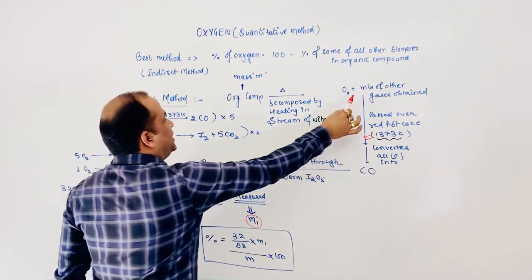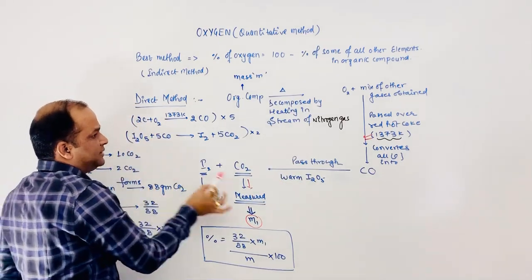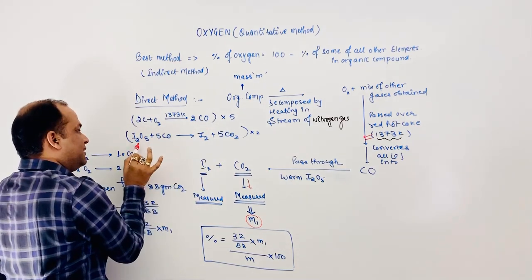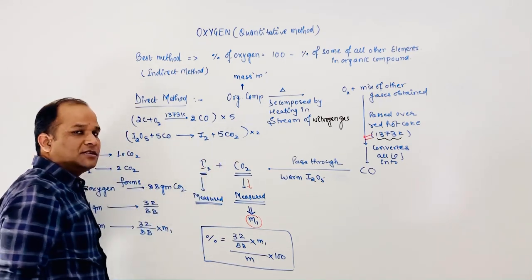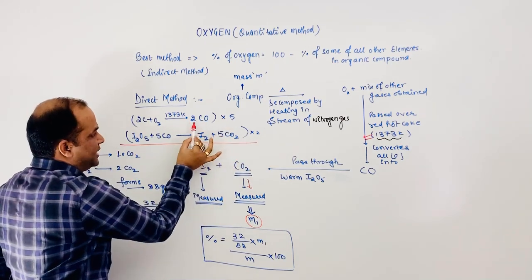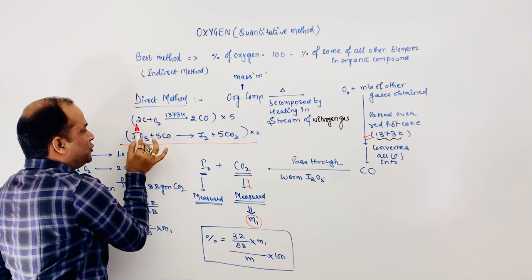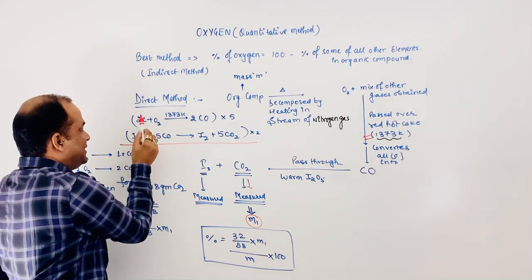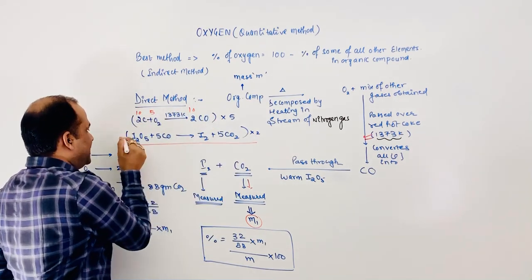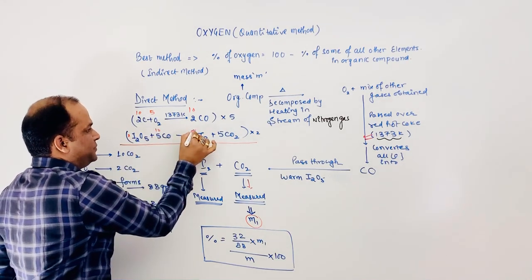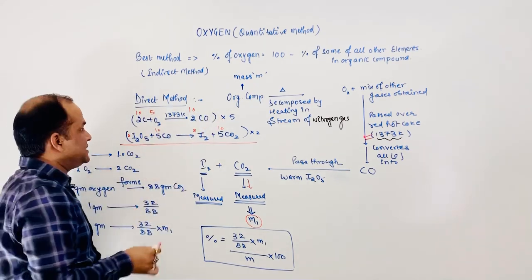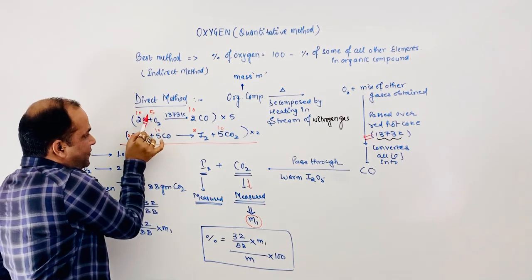This is the reaction: carbon and oxygen present in the organic compound form carbon monoxide via the red hot coke, and this CO reacts with I₂O₅ to form I₂ plus CO₂. When we balance and add these reactions, we get: 5 × 2C + 5 × O₂ → 10CO, giving 10CO + I₂O₅ → I₂ + 10CO₂.